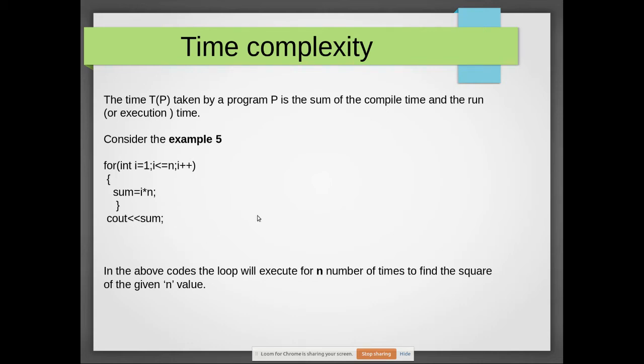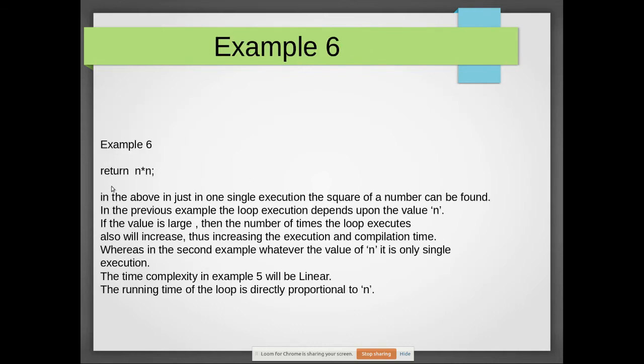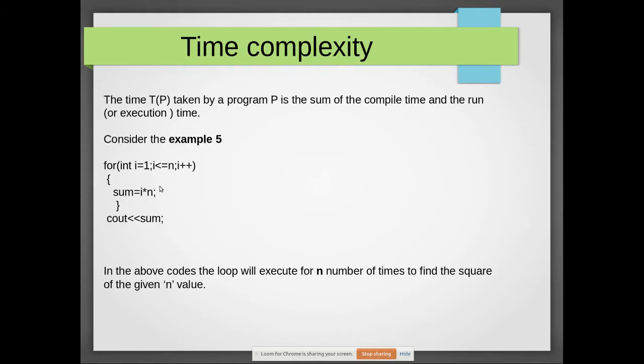The same program can be written like this: return n×n, which is nothing but the square. If you give 5, it's 5×5. Whereas in the previous case, you are putting a loop and within that you calculate the square of number n by multiplying i×n. First time it is 1×5, so sum will have 5.